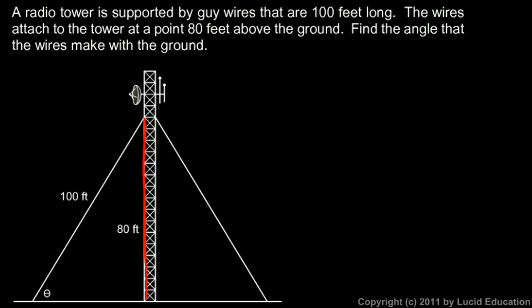This 80 foot distance right here is the side opposite theta. And this 100 feet here, that's the hypotenuse. And when you have the opposite and the hypotenuse, sine comes to mind. So we can write sine of theta is equal to the opposite, that's 80 feet over the hypotenuse, which is 100 feet.